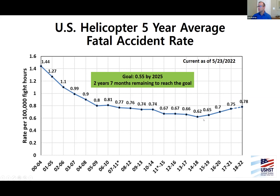Getting into the accident data for this month, starting out with the USHST's rate and where we're at in terms of measurement of the goal. Reminder: the USHST's goal is for the five-year average fatal accident rate to be at 0.55 or lower per 100,000 flight hours by 2025. Into 2024, we're about two and a half years into that five-year goal — just shy of the halfway mark. On the right edge of the chart, you see the dashed line — for 2018 through almost the first five months of 2022, we're at 0.78 per 100,000 flight hours. Not where we want to be in terms of getting to the 0.55 goal, but there is time left on that as well.